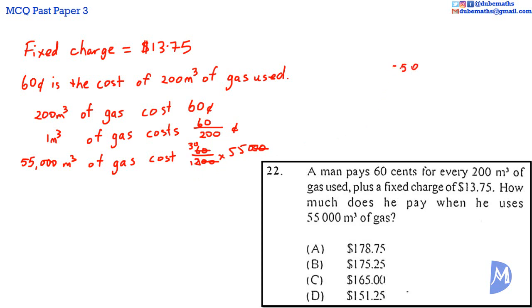Cancelling: 2 into 60 goes 30. 30 multiplied by 550 equals 16,500. 55,000 meter cubed of gas costs 16,500 cents.